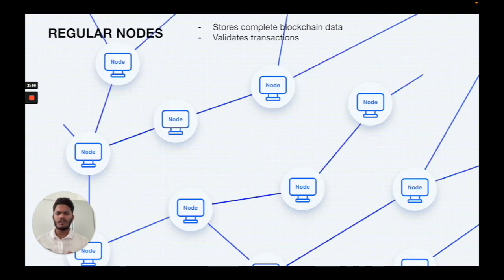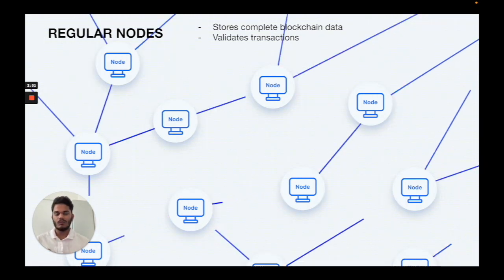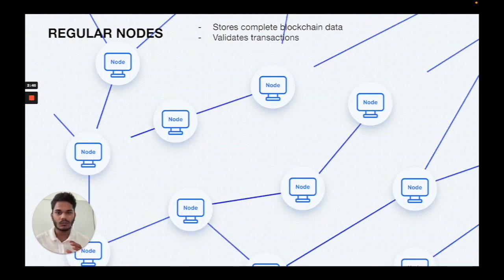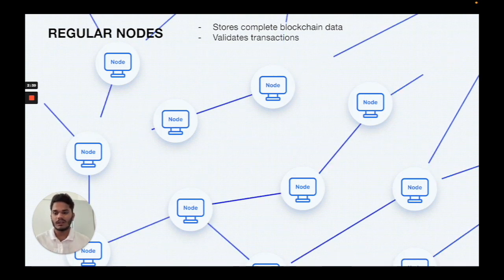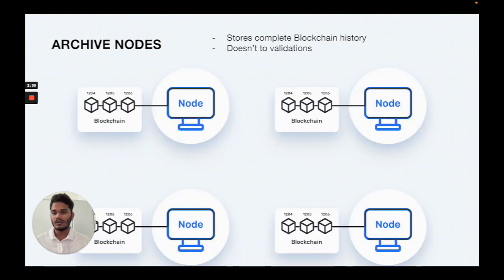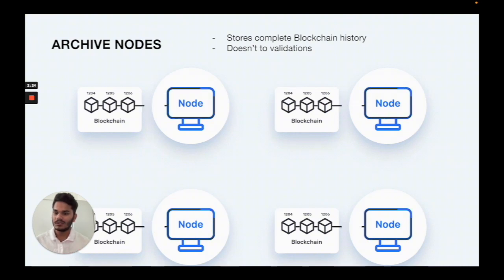When we compare a regular node to an archive node of Shadyum, what difference we will actually find is: in regular nodes, the node stores the complete blockchain data and does validate transactions — accepts or declines transactions in the blockchain. Whereas the archive node in Shadyum stores blockchain data but doesn't do validations; it doesn't accept or decline transactions. There are a set of validator nodes that actually do these transactions, but archive nodes are specifically for storing blockchain data.